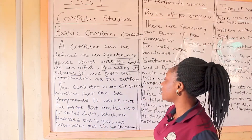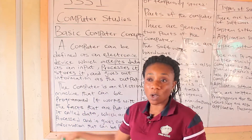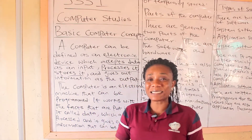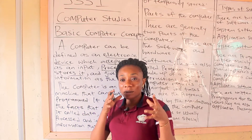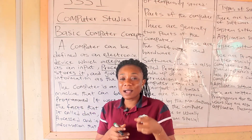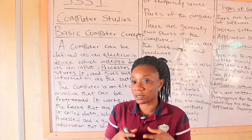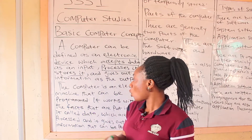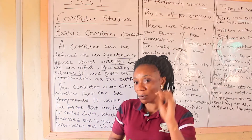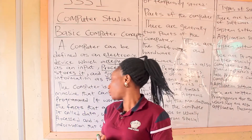The computer is also an electronic machine that can be programmed. What it simply means is that a computer is a machine that has some languages on it — there are languages that the computer understands, and those languages are programmed or written by computer programmers. That is what helps the computer to perform its functions.